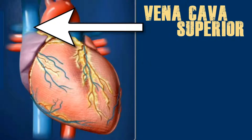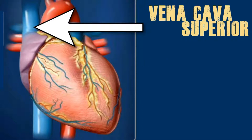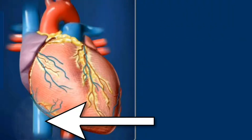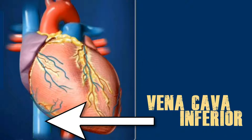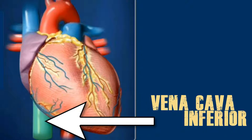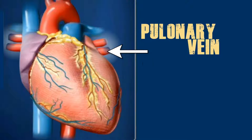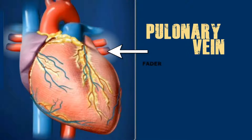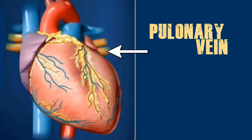Number four — vena cava superior: carries blood lacking oxygen from the head, neck, and arms into the right atrium. Number five — vena cava inferior: carries blood lacking oxygen from the legs and other lower parts of the body into the right atrium. Number six — pulmonary vein: carries oxygen-rich blood from the lungs into the heart's left atrium. Now you are aware of all six exterior parts of the human heart.